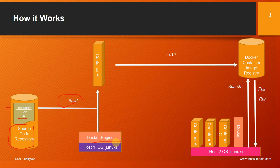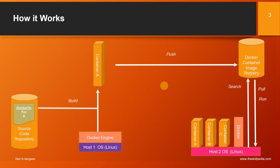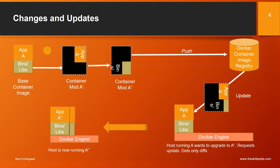The Docker engine is running on the machine. We build and produce a container image, push this image to a container registry, and then on the host where we want to run the application, we pull the image and run the containerized application — container A running, container B running, container C running. If required, on the host machine we can search for the required images.